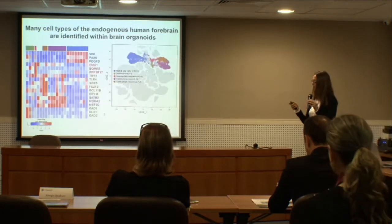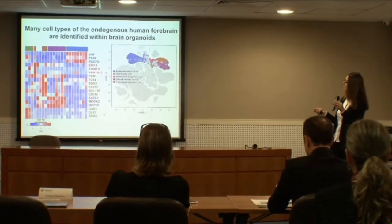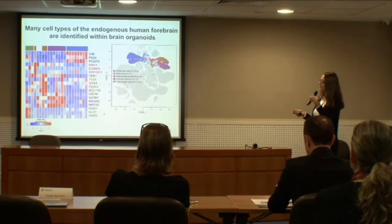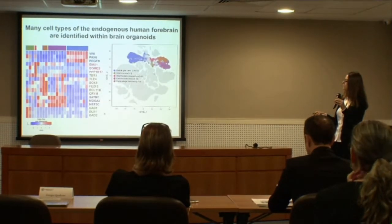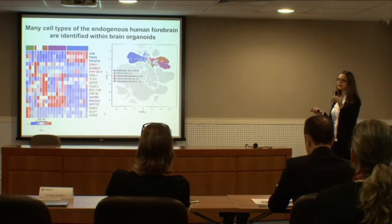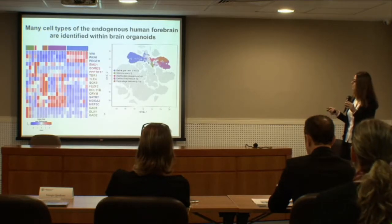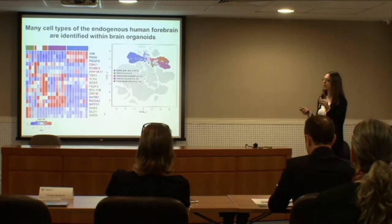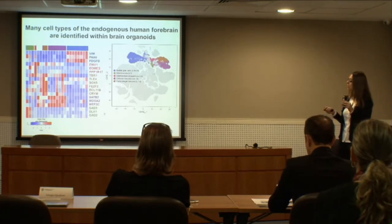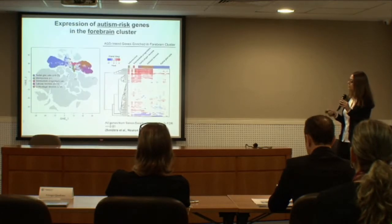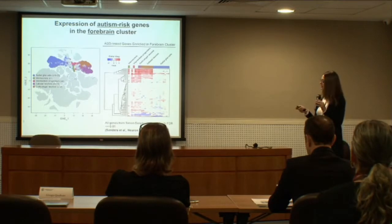We then looked at higher resolution of the cell types within the forebrain cluster. We found many different cell types: different kinds of progenitors such as radial glia and intermediate progenitors, and different kinds of forebrain neurons including excitatory neurons and inhibitory neurons. We performed this identification by comparing our dataset with the published dataset of human fetal cortex.